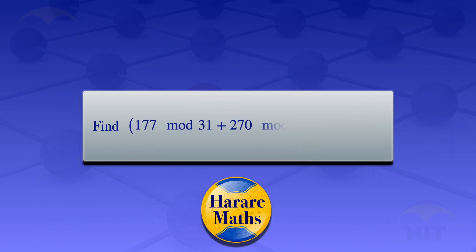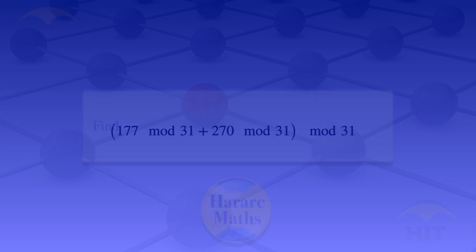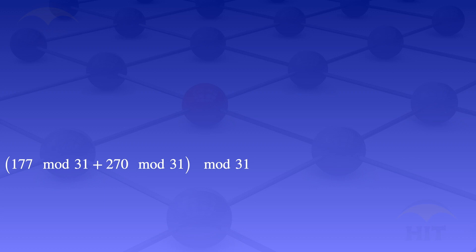In this video, I'm going to find (177 mod 31 + 270 mod 31) mod 31. Given that problem, we see there is this common term: mod 31, mod 31, mod 31.